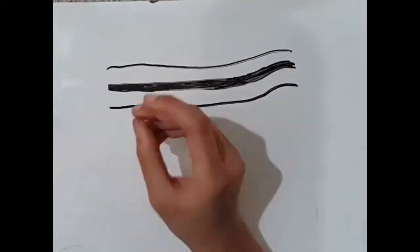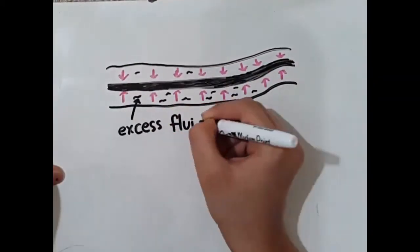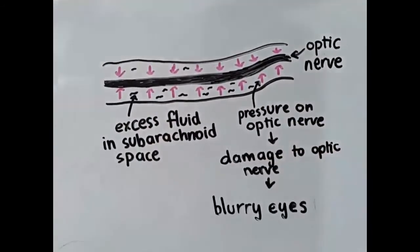For example, the optic nerve that carries visual information from the eye to the brain is surrounded with subarachnoid space. CSF buildup puts pressure on this, thereby damaging it and causing blurriness.